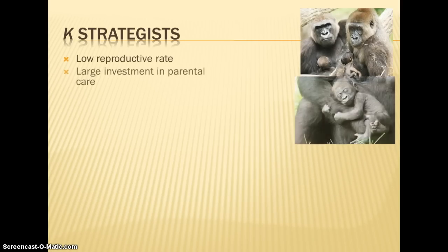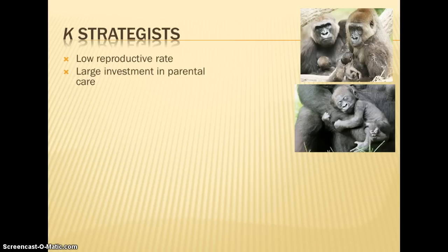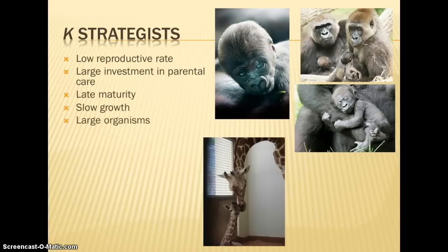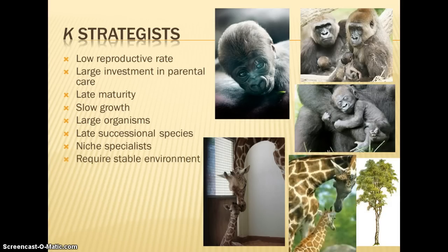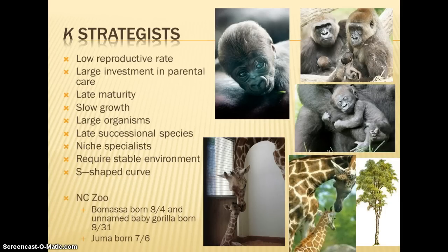K-strategists tend to have a low reproductive rate, producing only one or two young at a time, and they take care of their young, often for several years. They mature later — it may take years to become full grown — grow slowly, and tend to be larger organisms. They are late-successional species, meaning they take longer to develop after an ecological disturbance, and they tend to be specialists requiring a very stable environment. They would show the S-shaped curve on a graph.